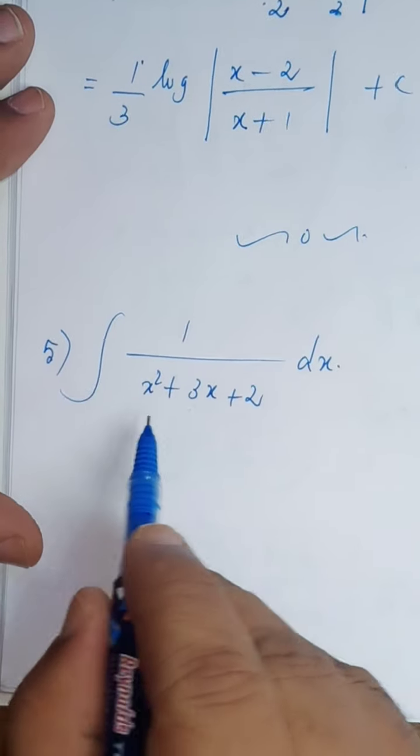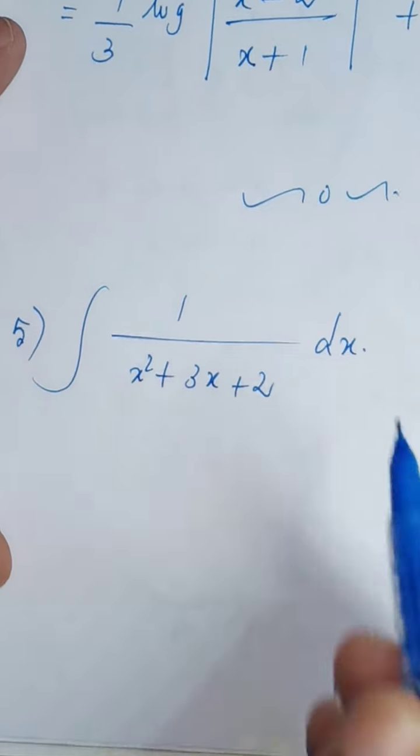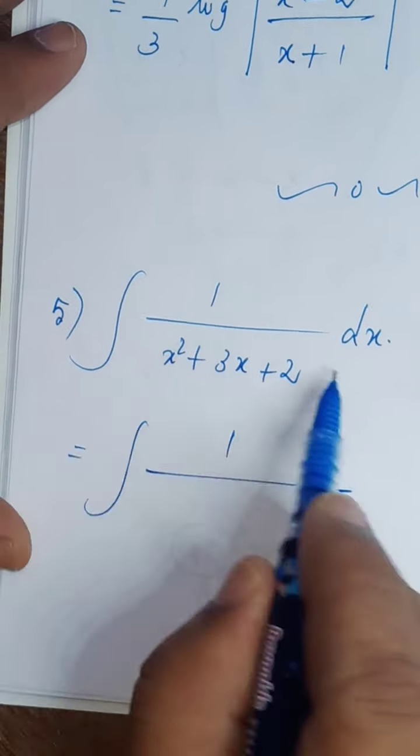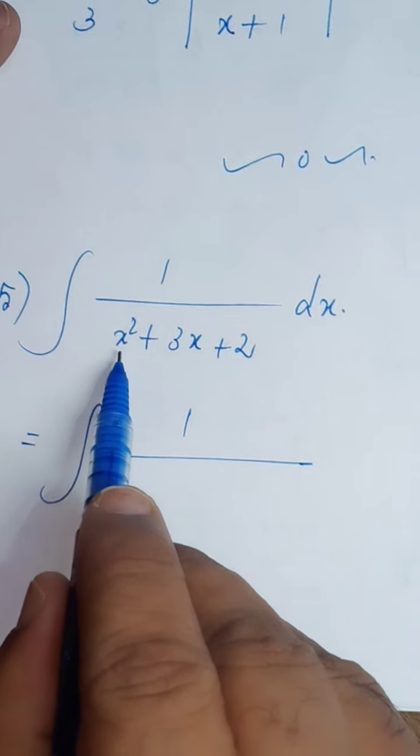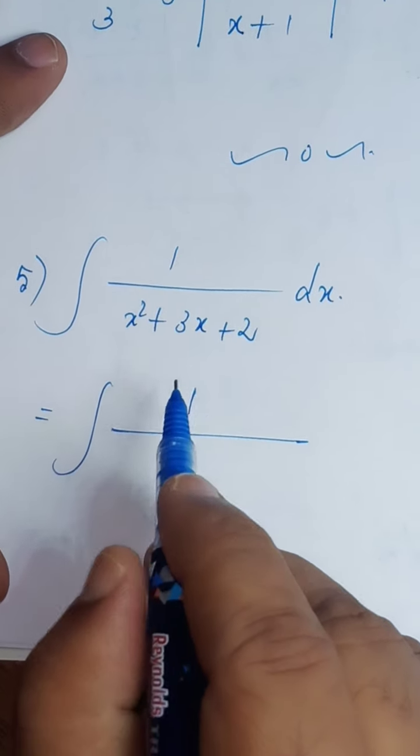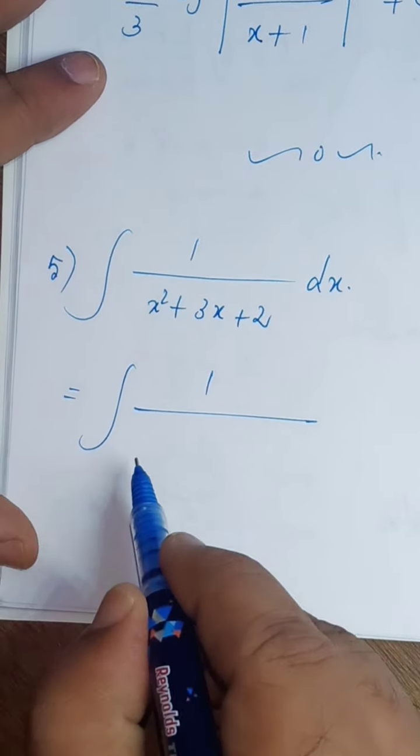Integral 1 divided by x squared plus 3x plus 2 dx. 1 divided by quadratic expression, coefficient of x squared is 1. You can directly go for completing a square method.